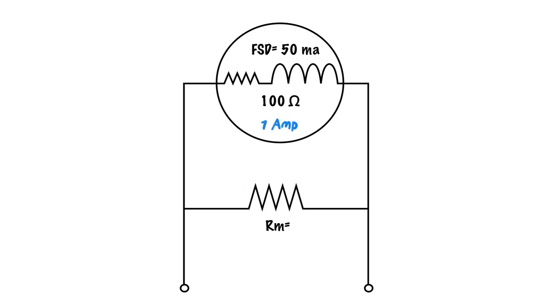So let's say that we're trying to read 1 amp. We know that our galvanometer here can only read 50 milliamps. So that means we need to determine how much current is going to be going across this shunt resistor.